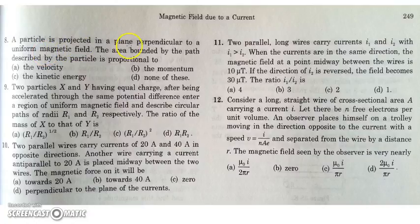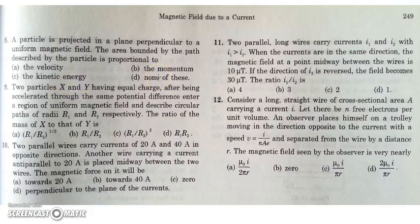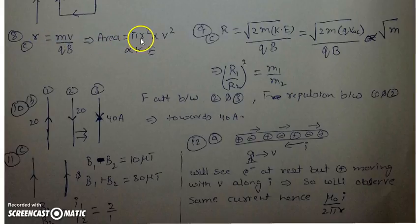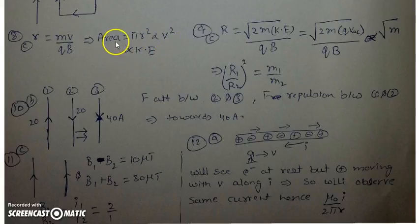In the next question, a particle is projected in a plane perpendicular to a uniform magnetic field. We have to find the area bounded by the path of the particle and determine whether it is proportional to velocity, kinetic energy, or momentum. R is given by Mv/QB, and the area of the circle formed is πR². Since R is proportional to V, R² is proportional to V², so the area is simply proportional to kinetic energy.